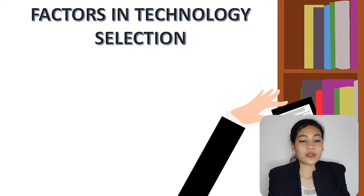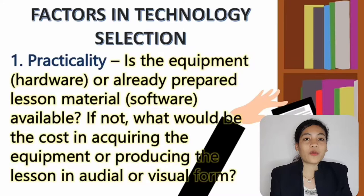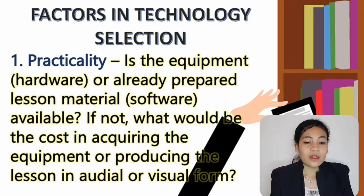Now let's move on to the factors in technology selection. In deciding which technology to use from a wide range of available media, the factors on which to base selection are: practicality, appropriateness in relation to the learner's activity or suitability, and objective matching.